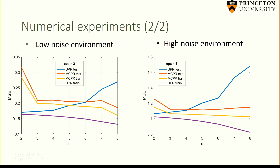We generalize these results in this figure. We train our model over some data and then test it, in both a low noise and a high noise environment. The training results are shown in yellow and purple. The unconstrained version does better on training because it can overfit. But our model does better when it comes to testing because we're taking additional information into consideration.